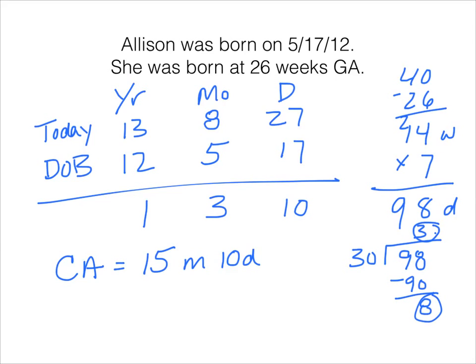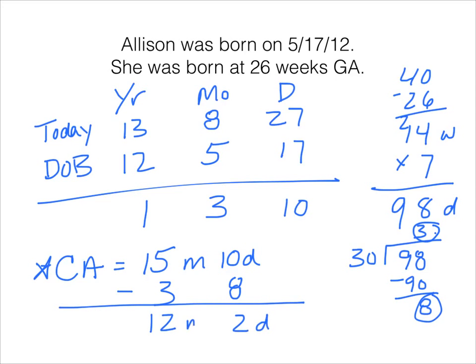We simply subtract 3 months and 8 days from the chronological age of 15 months and 10 days, and we get 12 months and 2 days. So for Allison, we would assess her as though she were a 12-month-old rather than a 15-month-old.